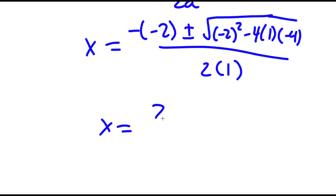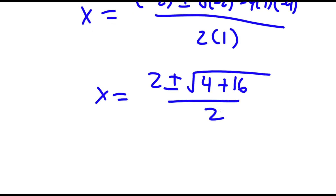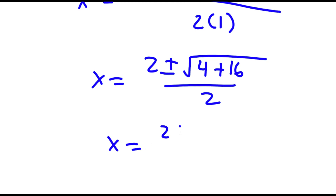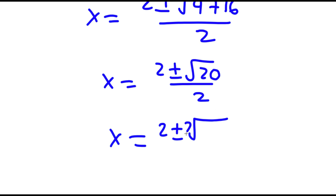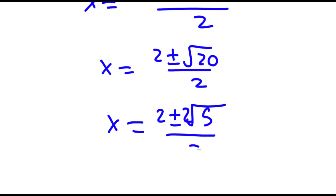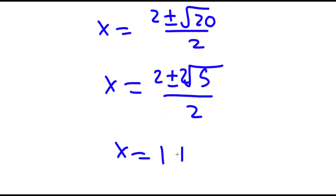This is equal to 2 plus or minus the square root of 4 minus negative 16, which is 4 plus 16, so the square root of 20, over 2. The square root of 20 is the same thing as 2 root 5, so this simplifies to 1 plus or minus the square root of 5.